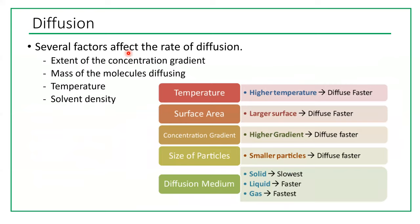Several factors affect the rate of diffusion: the extent of the concentration gradient, the mass of the molecule diffusing, temperature, and solvent density. When temperature increases, diffusion is faster. Larger surface area means diffusion is faster. A higher concentration gradient increases the diffusion rate. Smaller particles diffuse more easily through a membrane, so diffusion is faster. Regarding diffusion medium, solids move slowest, liquids faster, and gases fastest.